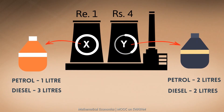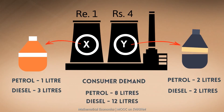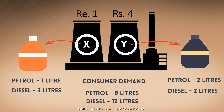The problem is: how much of crude oil X and Y is needed to meet the minimum demands of petrol and diesel, so that the cost of the refinery is minimized? It would be helpful to construct a table first to understand the problem. Pause the video and try to construct a table.